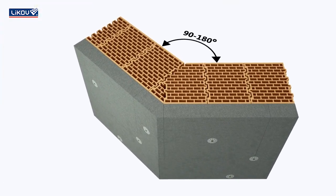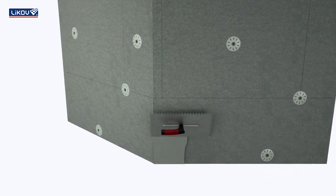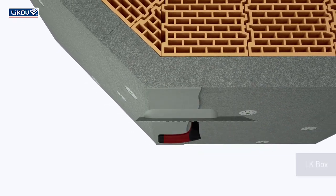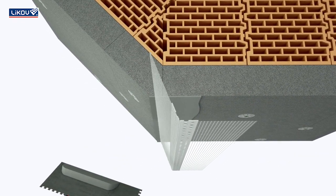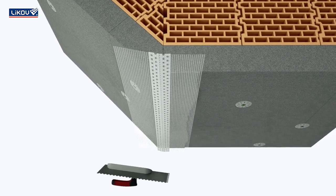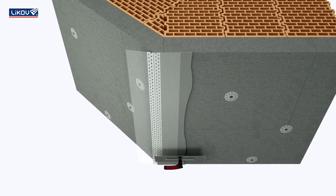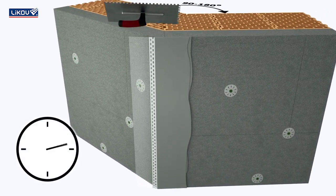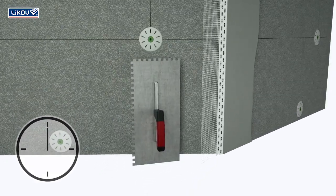For an edge of an angle other than 90 degrees, use the LK box bead, the arm angle of which is adjustable. At first, fit one arm into the base coat mortar, and after it hardens, apply the base coat mortar to the second one so that the bead does not become unfastened due to shape memory.